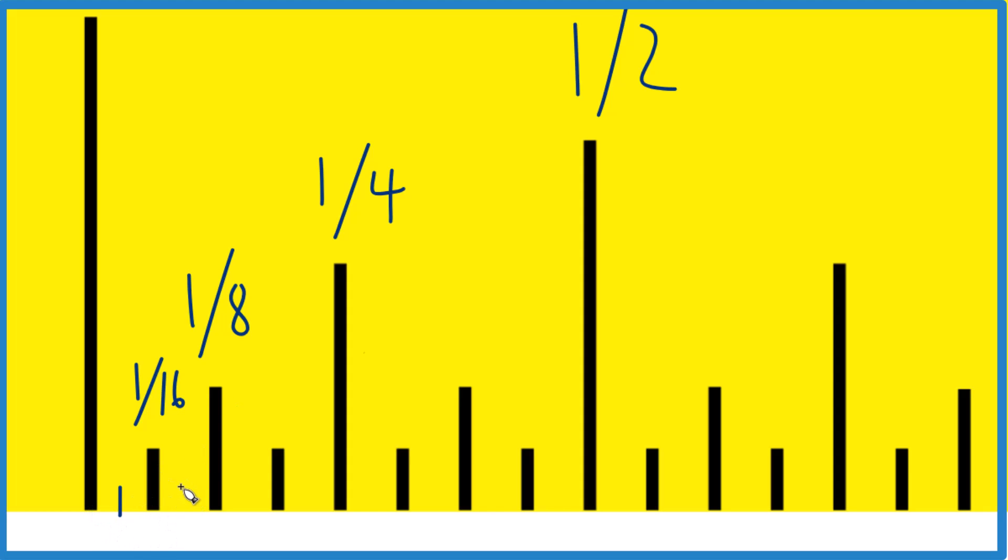Let's split these sixteenths into thirty-seconds. We have 5/32nds: one, two, three, four, five, right there. That's 5/32nds. That's it.